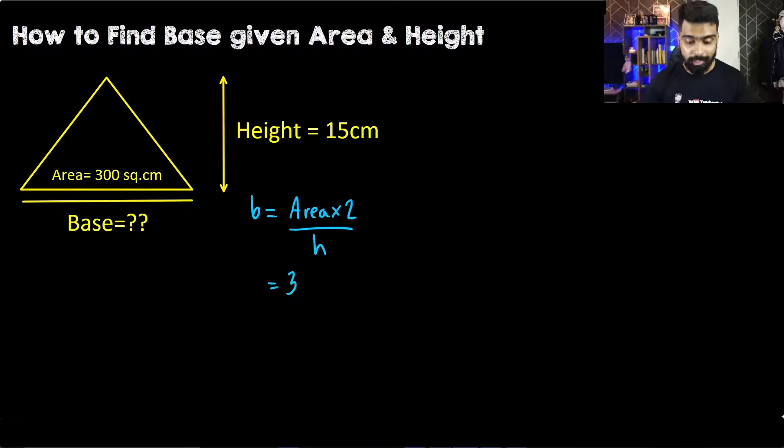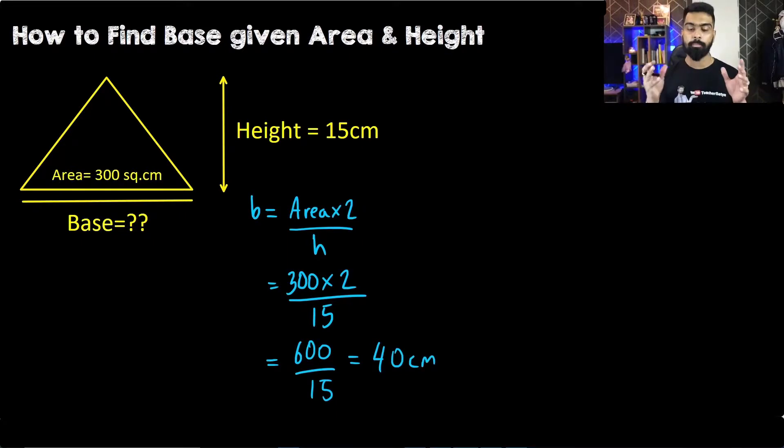You can either multiply 300 with 2 and divide by 15, or you can simplify it. 300 times 2 is 600. 600 divided by 15 equals 40 centimeter. Therefore, the base in this question equals 40 centimeter.